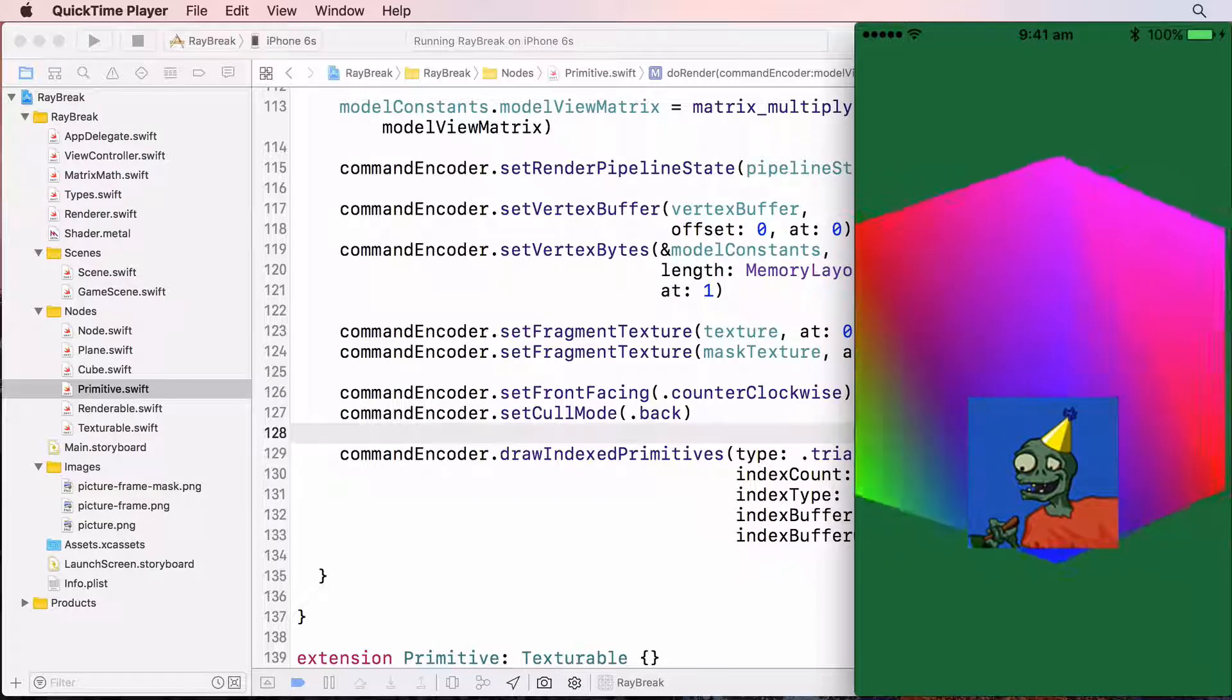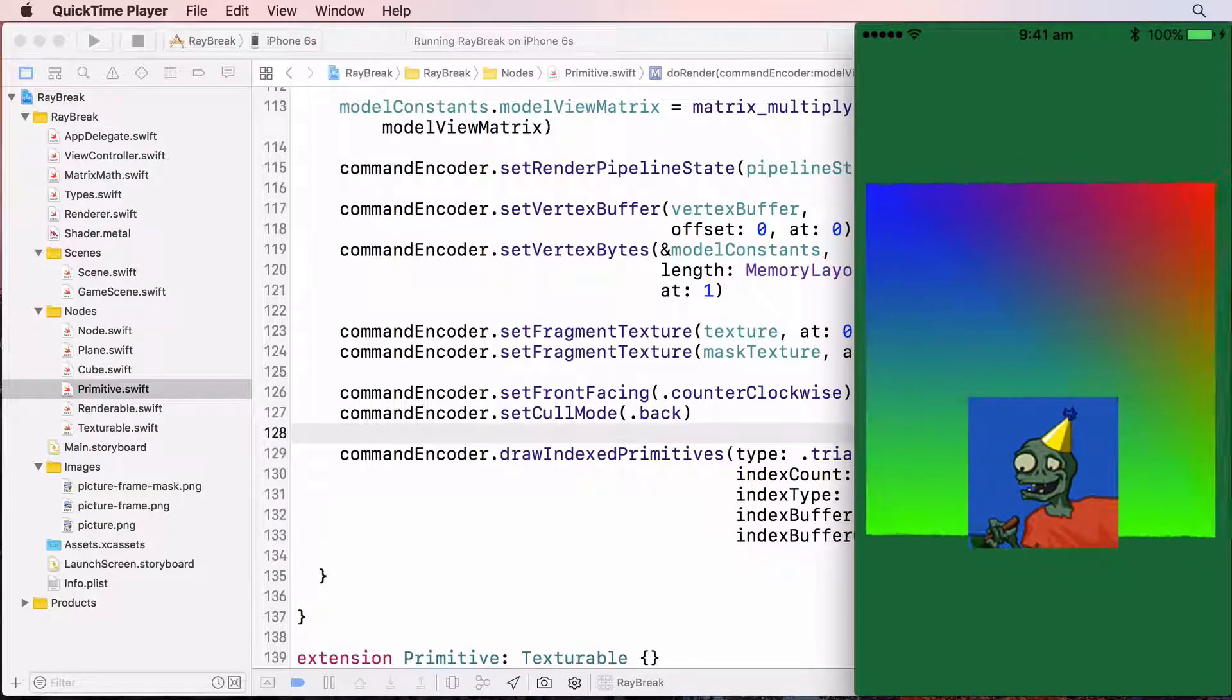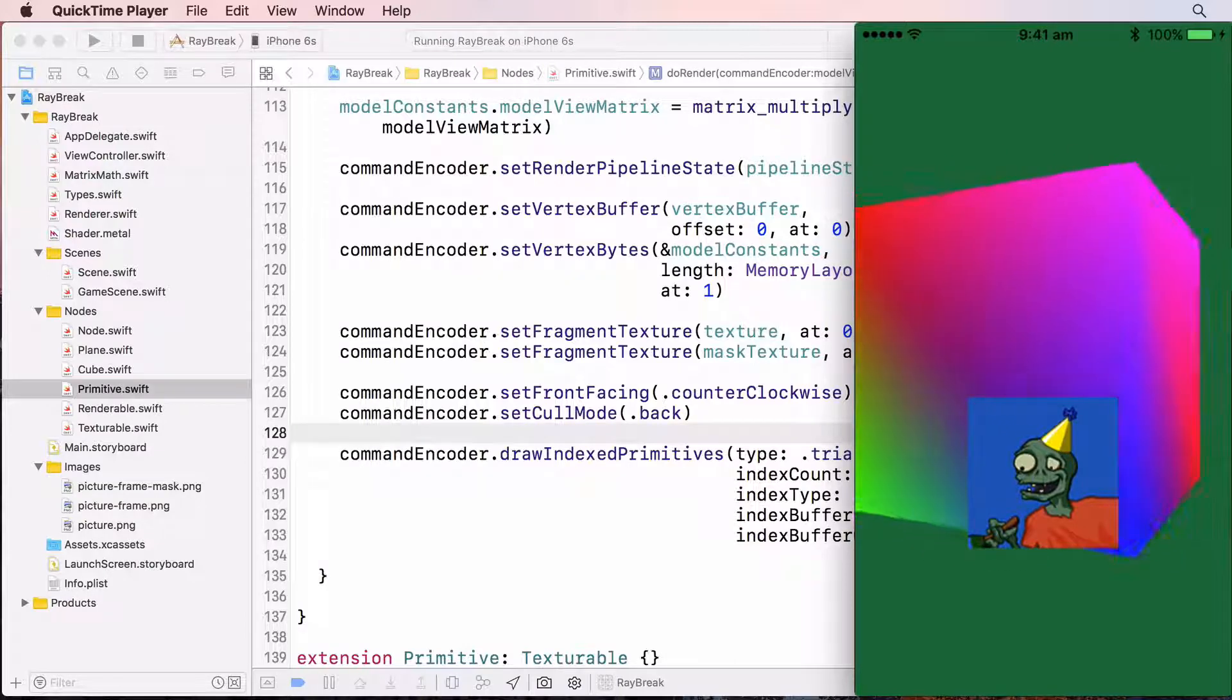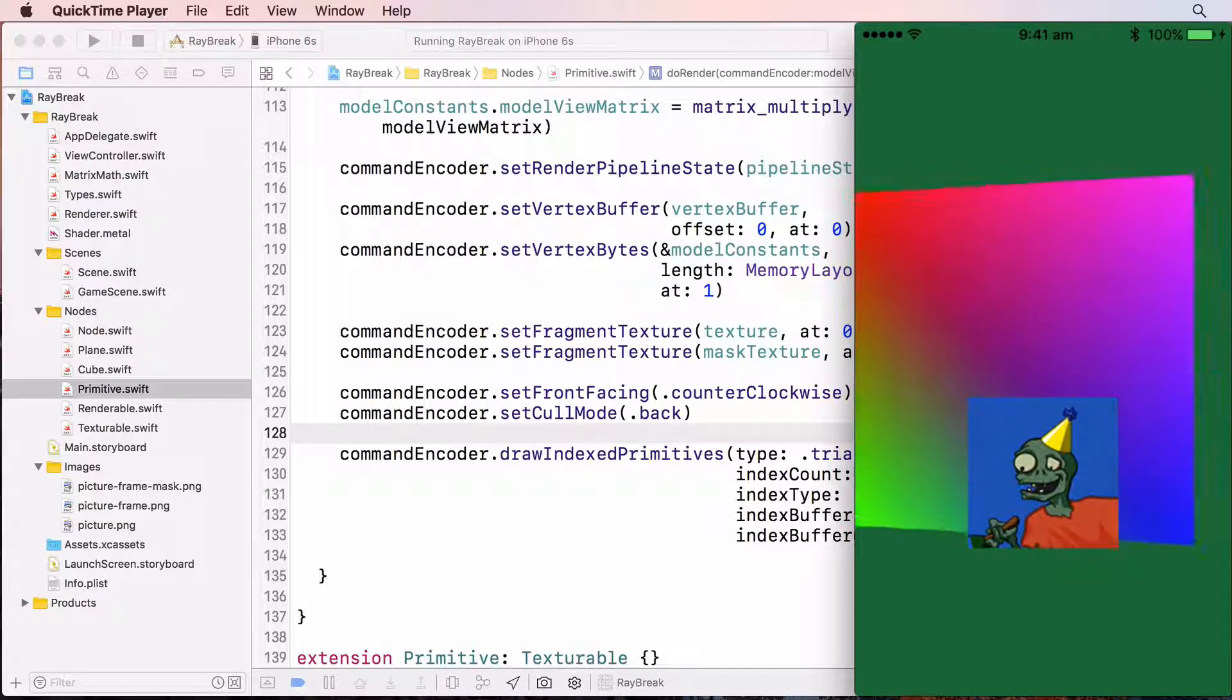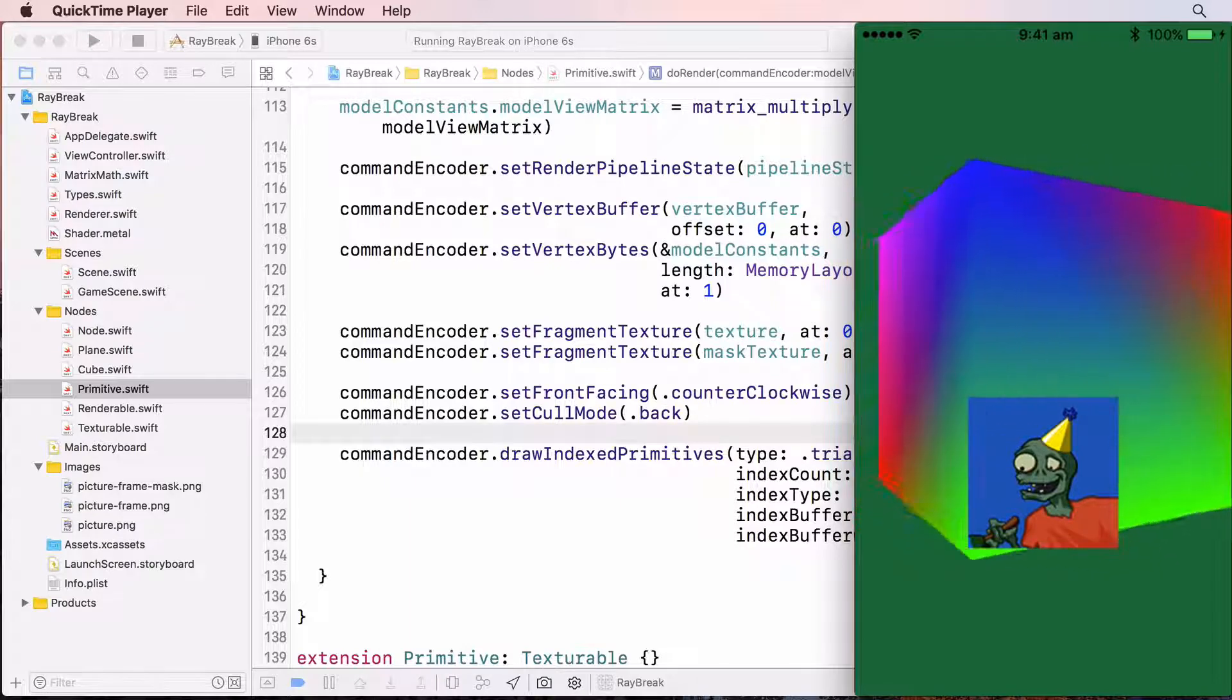One thing to be aware of is if I rotated the zombie picture, it would only show for half the time. When the plane is reversed, it's showing a back face, and so it would be culled. But here we still have the problem that the zombie picture should be behind the cube and not in front of it.